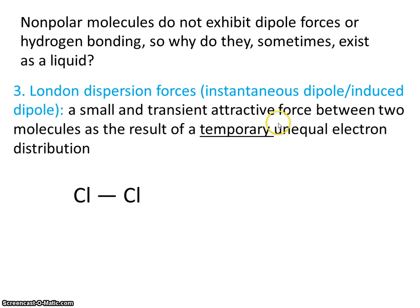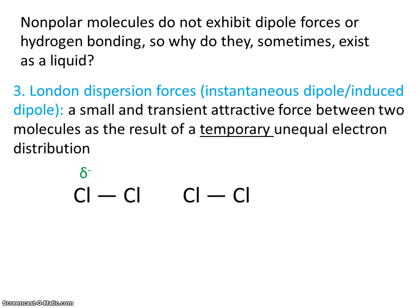This is a small and transient attractive force between molecules, so just for a moment, there's going to be a small force that crops up. That's going to result from the temporary unequal sharing of electrons. These are two shared electrons, and just for a moment, they're going to be shared unequally — the shared electron pair gets closer to one chlorine atom, giving it a partially negative charge.